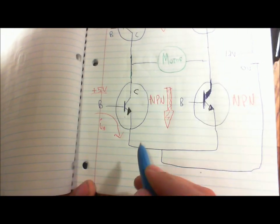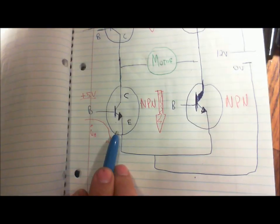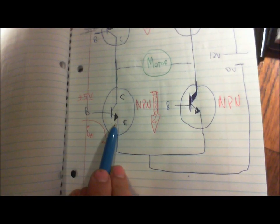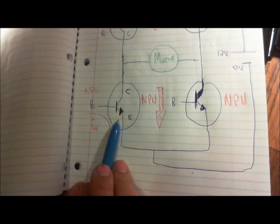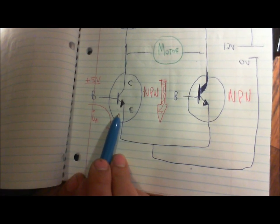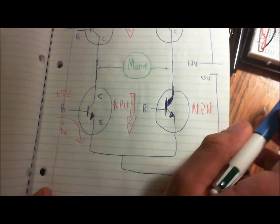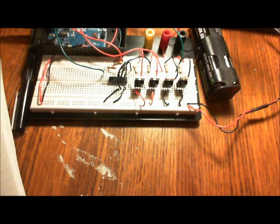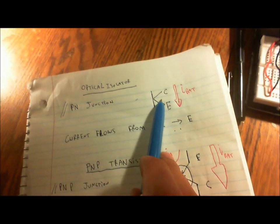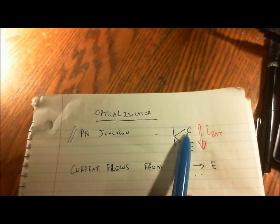So and with these, these are NPNs, the current flows from the collector to the emitter. So that's exactly opposite the PNPs. And the optical isolator is actually, if you see here, it's actually a PN junction. So current flows from the collector to the emitter.